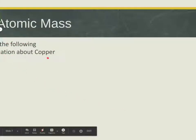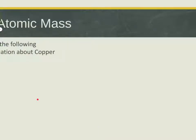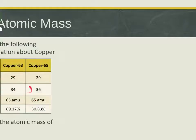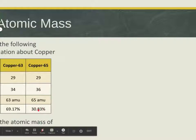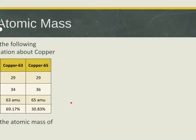Here's our example using copper. Copper has 29 protons in both isotopes. Copper-63 has 34 neutrons (since 29 + 34 = 63), and copper-65 has 36 neutrons (since 29 + 36 = 65). The mass numbers are 63 and 65. In nature, copper-63 makes up 69.17% of all copper, and copper-65 is 30.83% of all copper. This is the information we need — the mass of each isotope and its abundance — to calculate the average atomic mass of copper.